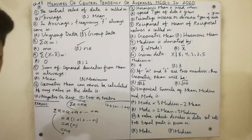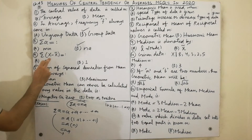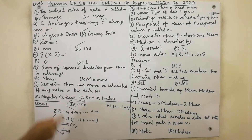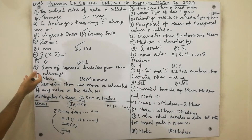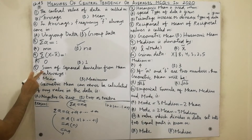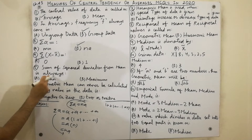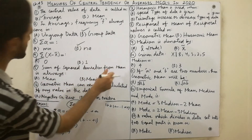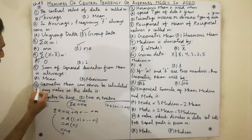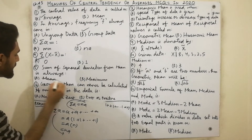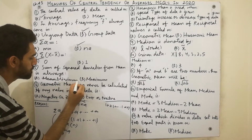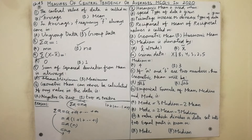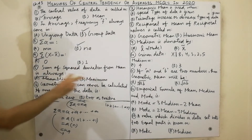The fourth MCQ is a property of arithmetic mean: Σ(x − x̄) is always equal to zero. The fifth MCQ is also a property of arithmetic mean: the sum of squared deviations from the mean is always minimum — not maximum. Must remember: sum of squared deviations from the mean is always minimum.